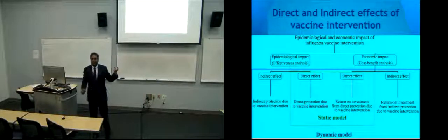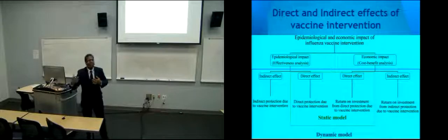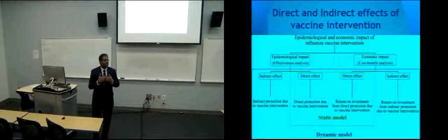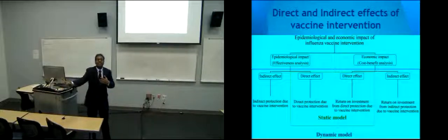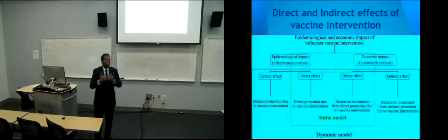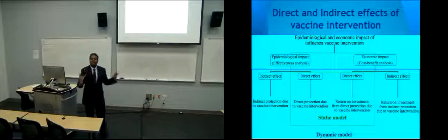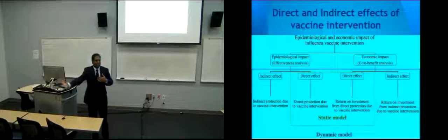When we implement a vaccination program, if I'm infected with influenza and spread it to someone, they could potentially get it from me — that's transmission. On the other hand, if I get vaccinated and develop protective immunity, I'm also stopping the chain of transmission. So that person gets the indirect benefit while I get the direct benefit of vaccination, and this applies both epidemiologically and economically.